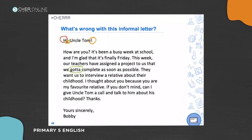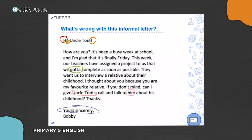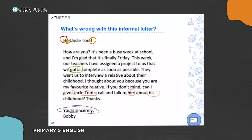The better option is to change 'gotta' to 'have to' — we have to complete as soon as possible. I would advise you don't do that as it is overly casual. Any other mistakes? Let's talk about mistakes first and I will get into the rest later. This is clearly a mistake — he's writing to Uncle Tom, so why is he saying Uncle Tom's name here? It should be 'Can I give you a call and talk to you about your childhood?' There are many errors with this.